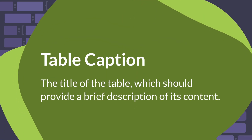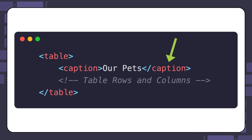The first best practice that we will cover is using table captions. With the caption element, you can write the caption or title of a table so users, especially those who use assistive technologies, can quickly understand the table's purpose and content. You should place the caption element immediately after the opening tag of the table element. This way, screen readers and other assistive technologies can provide more context by announcing the caption before reading the content.